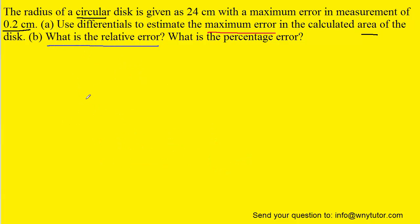Now, for part B, to calculate the relative error, what we do is we take the error in the area and divide it by the total area. In differential notation, we could write dA divided by the area.